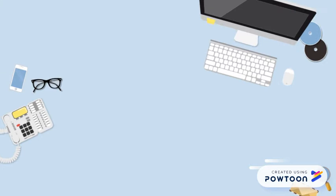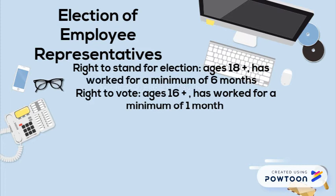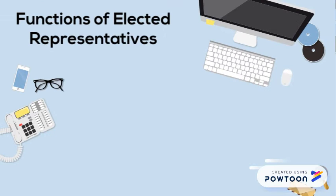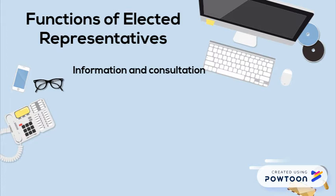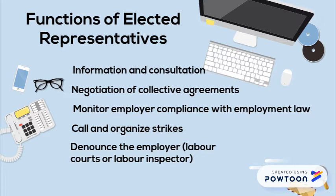Let's now talk about the rules that coincide with electing a representative. There are two important ones. The first is that every employee over 16 who has been employed for at least one month has the right to vote. The second is that every employee over 18 who has been employed for at least six months has the right to stand for an election. The main functions of elected representatives are for information and consultation, to negotiate collective bargaining, to monitor employer compliance with employment law, to call and organize strikes, and to denounce the employer before labor courts or labor inspections.